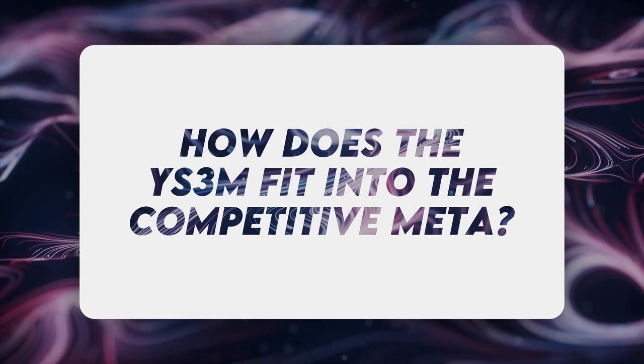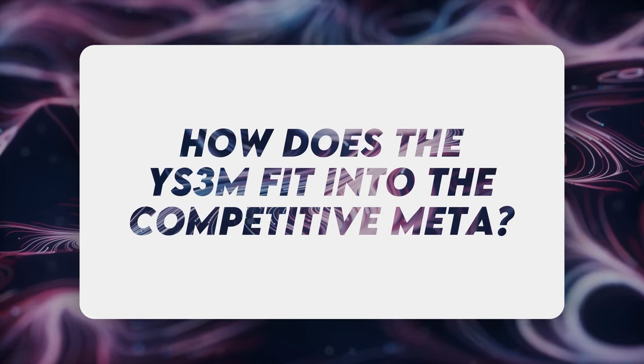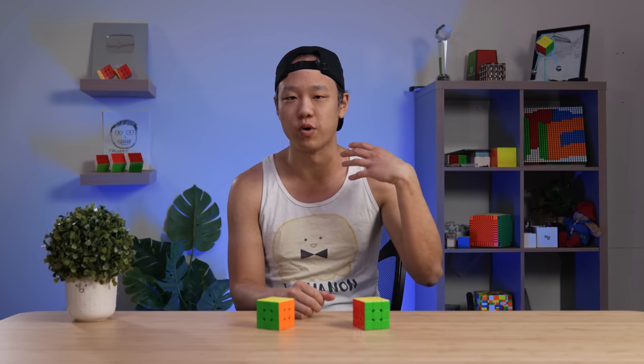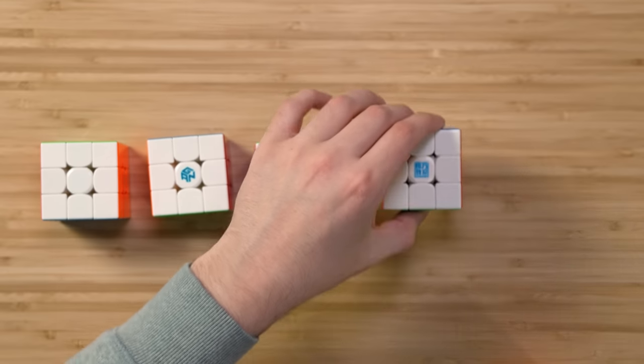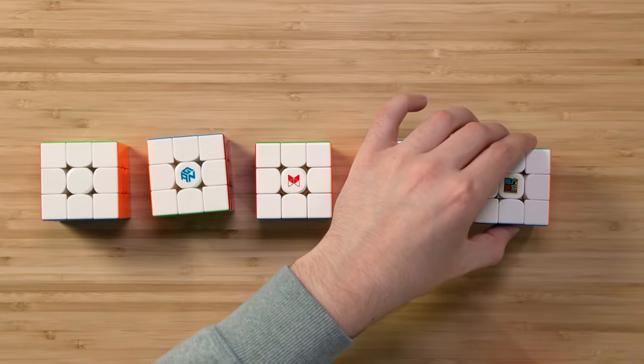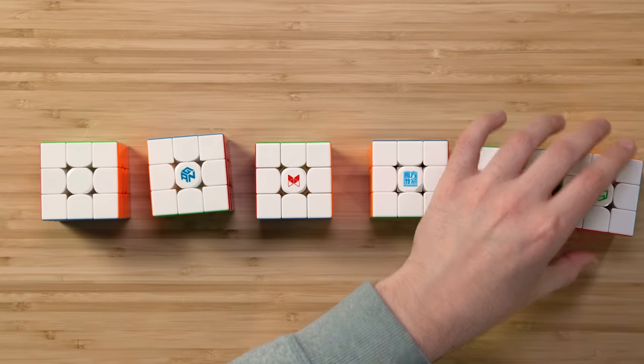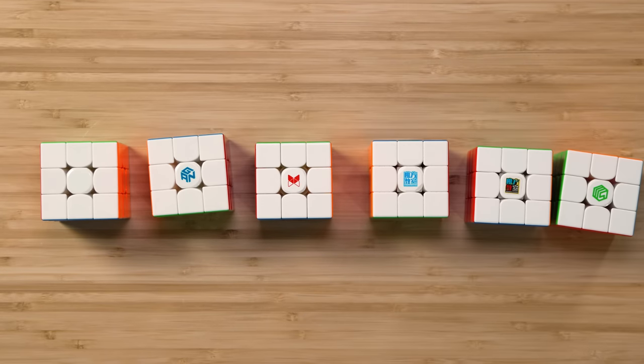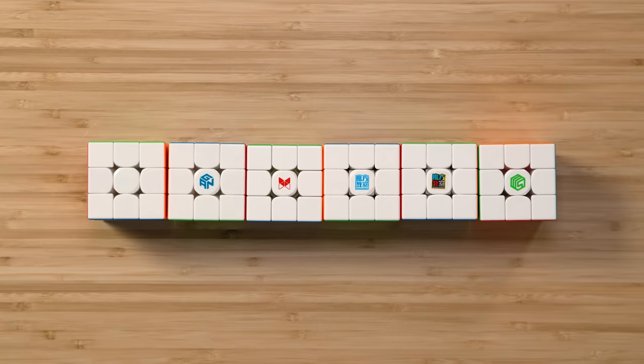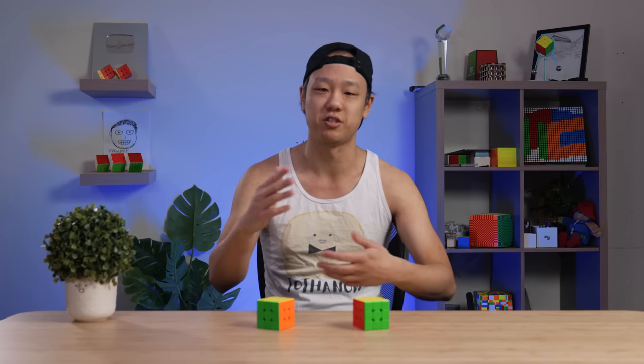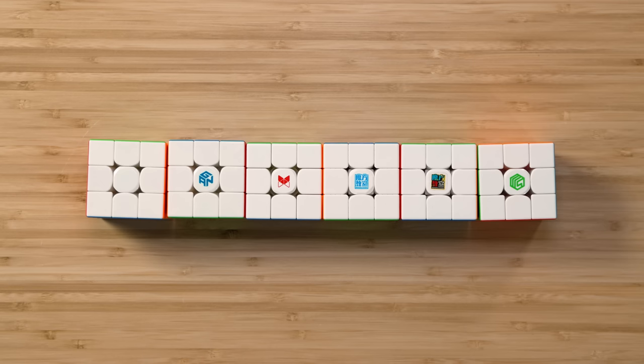The next question is, how does this cube fit into the competitive meta? To answer that, let's give you a rundown of what the meta is. We got the GAN 12, the GAN 13, the Tornado V3, the RS3 Super ball core mostly, the RS3 2020, and then there might be an MS3X somewhere in there. We're going to compare this cube against some of the other cubes that we just listed and talk to you about the differences and the similarities so you can see how they stack up.